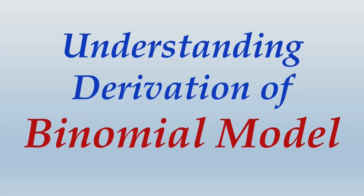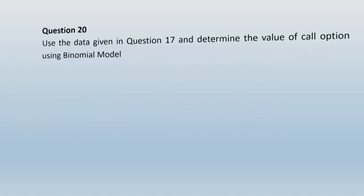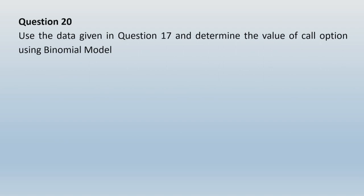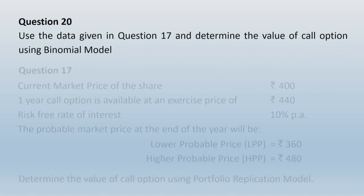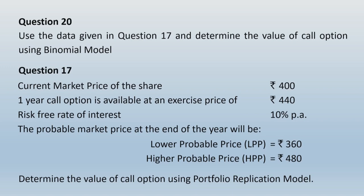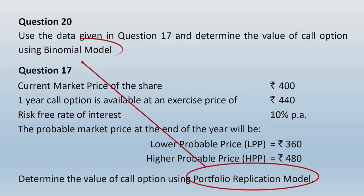Now let us learn the derivation of the binomial model. Let us take question 20, which you have already solved, and use that same example. Question 20 references question 17 and asks you to find the value of the call option using the binomial model. The objective here is to understand the derivation of the binomial model formula — not just apply it mechanically.